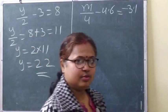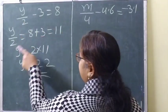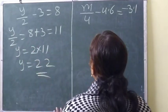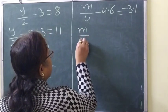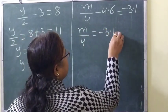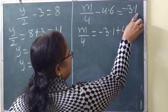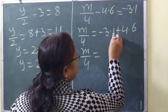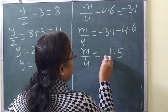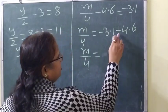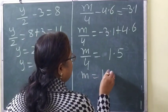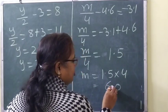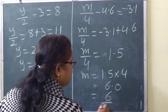For m by 4 minus 4.6 equals minus 3.1: m by 4 equals minus 3.1 plus 4.6. Minus becomes plus. Subtracting: 6 minus 1 is 5, and 4 minus 3 is 1, giving 1.5. So m equals 1.5 multiplied by 4, and 1.5 times 4 is 6. The final answer is 6.